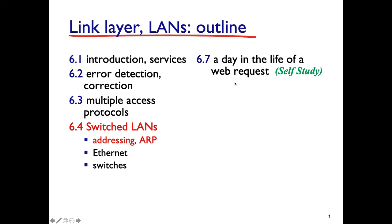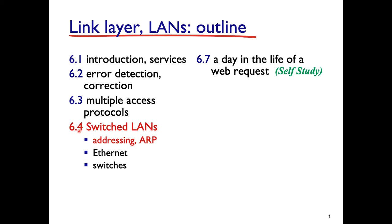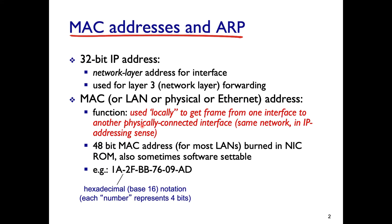We are continuing with the link layer, studying switched LANs and Ethernet that are widely used in corporate environments. The first thing we notice is that IP is 32-bit, but link layer addressing is 48-bit. Because it's much longer, it's usually written in hexadecimal — for example, this is a hexadecimal 48-bit MAC address.